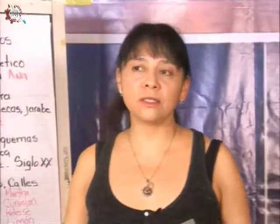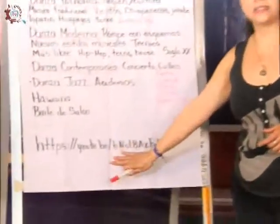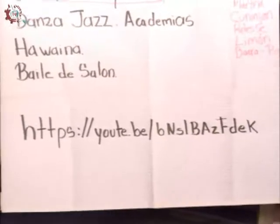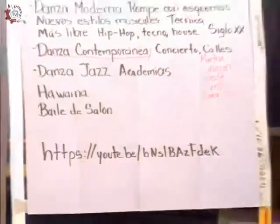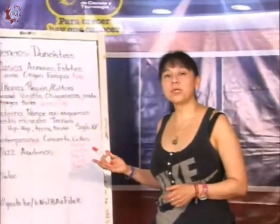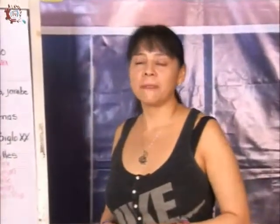De esta manera vemos los diferentes tipos de danza que surgen en nuestro país y en todo el mundo. Les comparto un link con el que estamos trabajando en la técnica 17, en el cual podemos enriquecer un poquito más esta clase de géneros dancísticos, donde nos explican y ahondan más en estos tipos de danza: qué tipos existen, de dónde surgen, por qué surgen, y nos dan diferentes ejemplos de los vestuarios que existen. Espero que esta clase les sirva y puedan checar el link para entender mejor lo que estamos hablando en la plataforma Classroom. Agradezco su atención y los invito a continuar retroalimentándonos en estas sesiones. Muchas gracias, que estén muy bien.